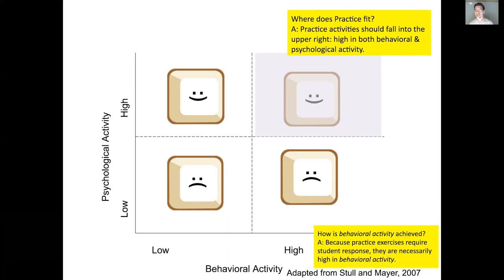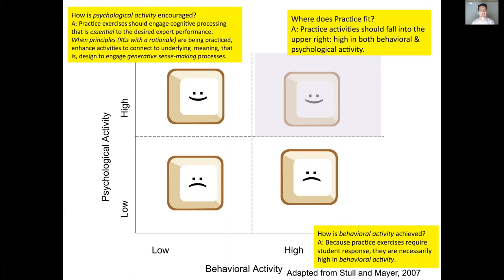Behavioral activity is achieved in practice because practice exercises require students' responses, so they are necessarily high in behavioral activity. Psychological activity is encouraged because practice activities should engage cognitive processing essential to the desired expert performance. When you're having students practice principles — a kind of knowledge component that has a rationale — it's good to enhance those activities to connect to the underlying meanings and those rationales.